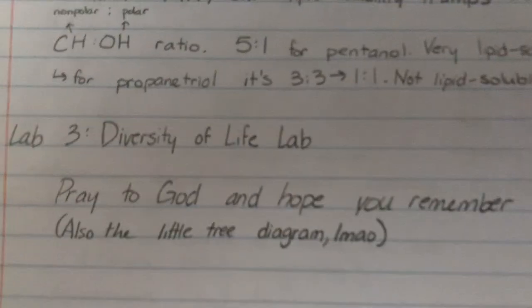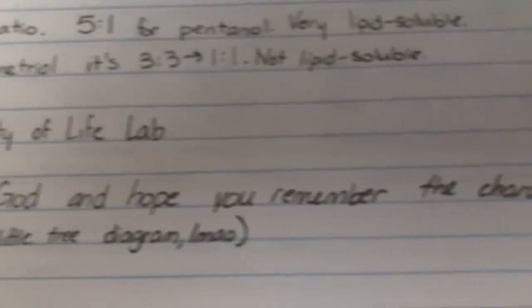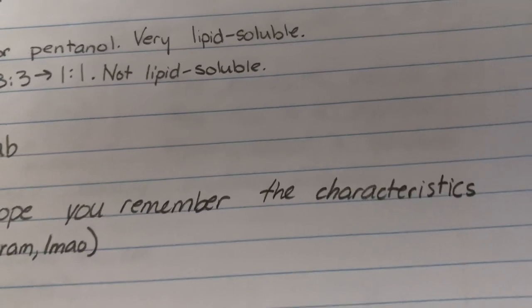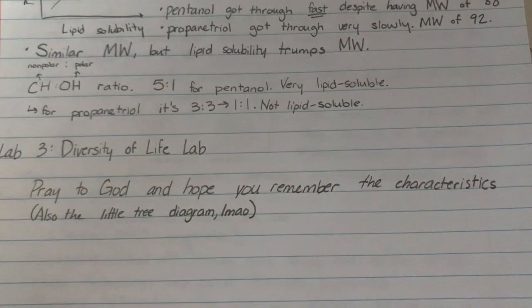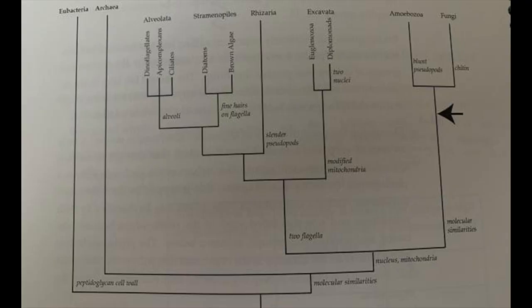For the final lab, the diversity of life lab, he basically just said to take the diagram on page 28 with all the different characteristics and to just memorize that. And he said that that would be the most efficient way of studying, because you would be able to quickly differentiate between the 14 different subspecies of microscopic organisms.